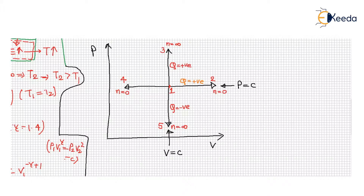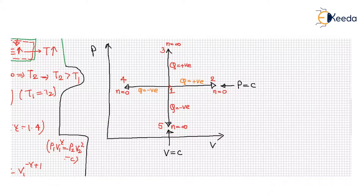The system pressure will increase. To maintain that system pressure, you must supply heat to the system. The value of k ranges from greater than or equal to zero to less than or equal to infinity. This is the general k value range.